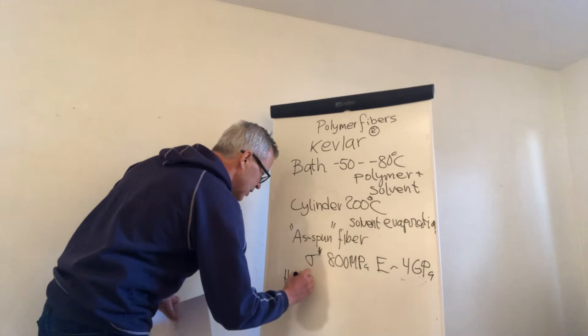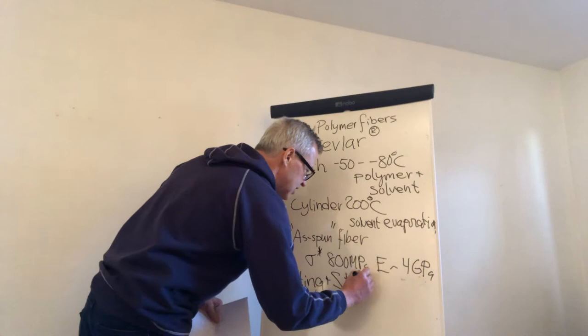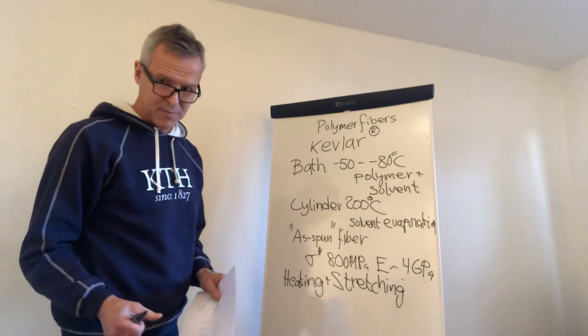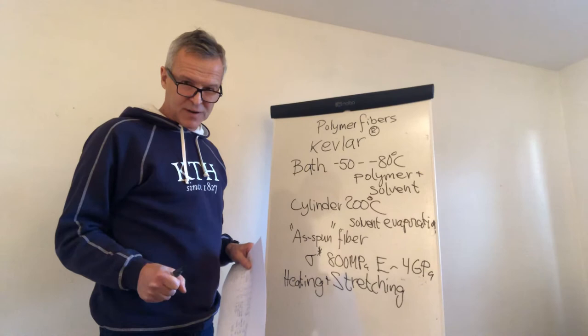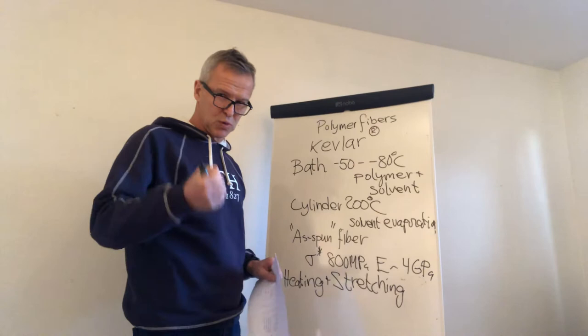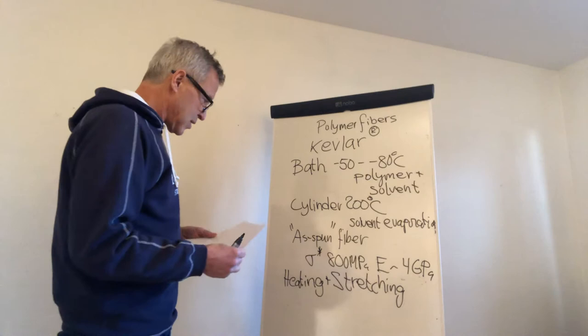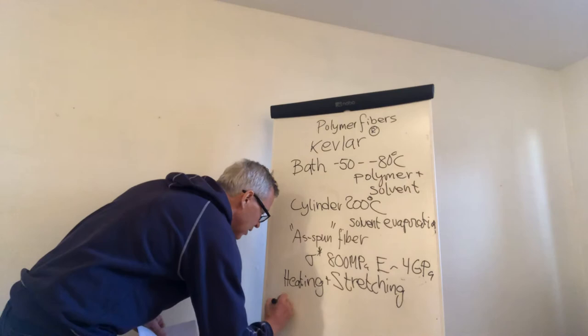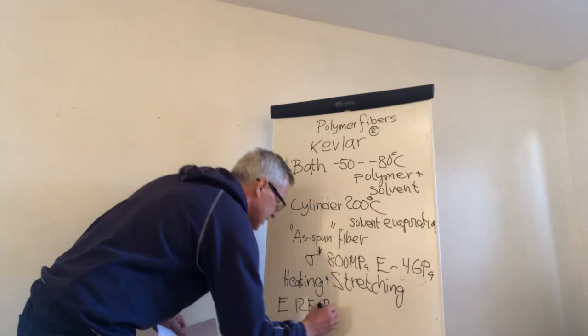The reason of course is that the orientation of the polymer molecules is incomplete. So then we need to do another stage. We do heating plus stretching because we need to align the molecules. You remember the carbon fibers, we also do heating and stretching, but the temperature range of course is completely different. Here we're not carbonizing, we're simply stretching the molecules to improve the orientation. Then we end up with a modulus of 125 gigapascal. That's pretty good.